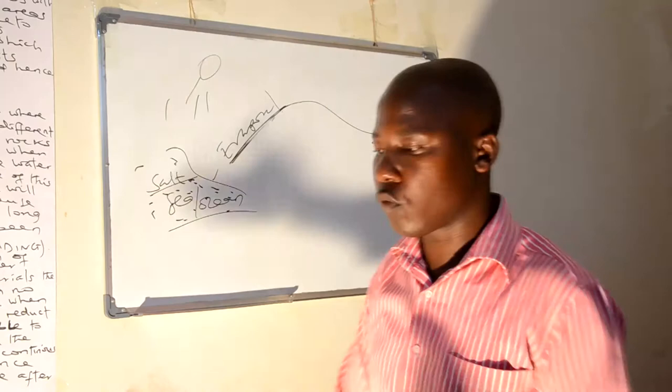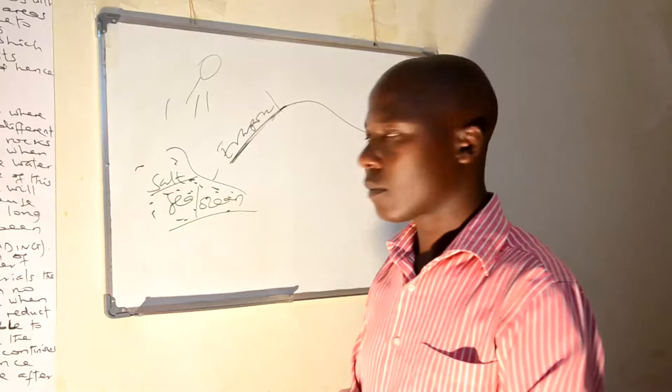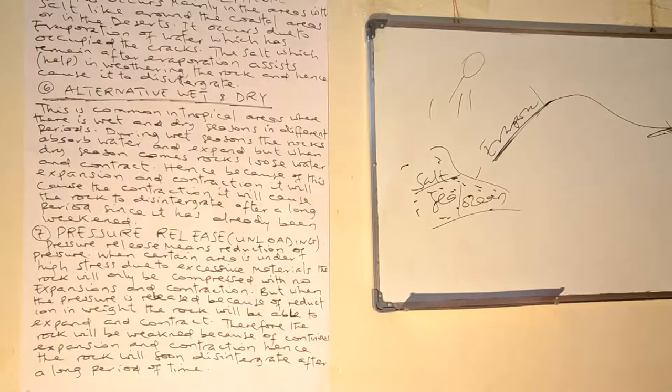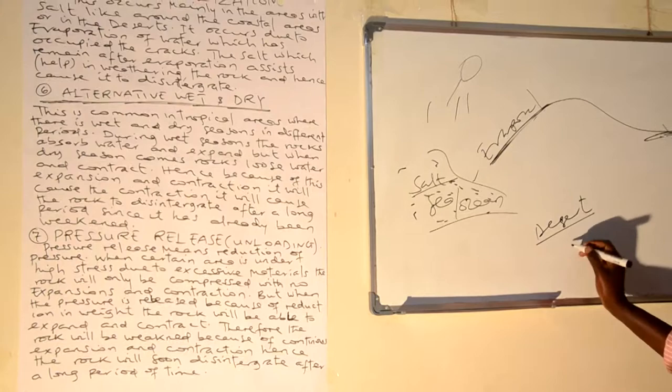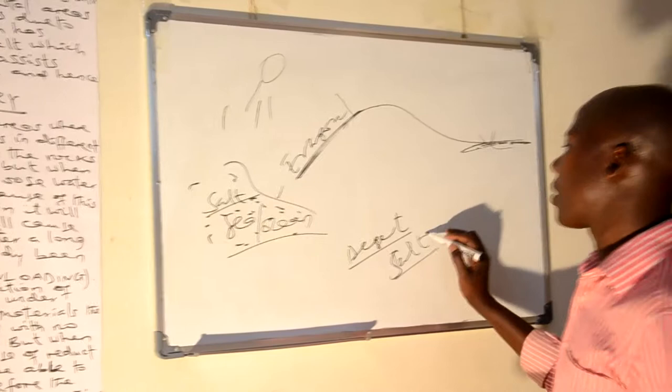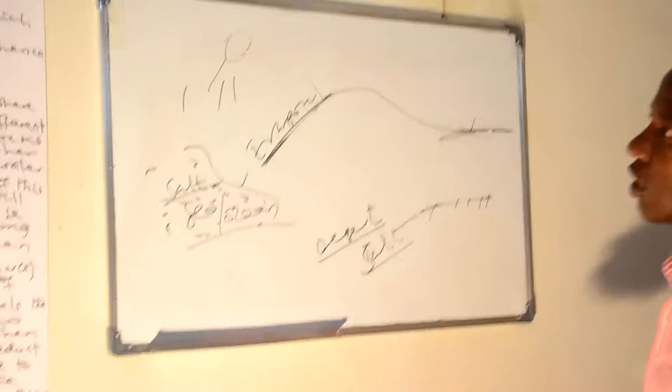Therefore, this is just taking place in coastal areas. Apart from that, it is also taking place in desert areas, where there is also some area of salt. Therefore, wherever this pressure will be taking place and reaches the landmass, it can cause expansion, disruption, or contraction of that landmass, whereby this disaggregation will be taking place.